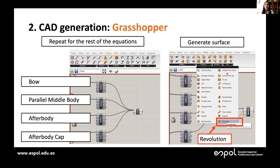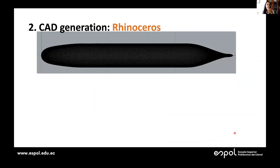We repeat the process for the rest of the equations: the parallel middle body, the after body, and the after body cap — four equations total. We join them together, and since the geometry is an axisymmetric body, we use the revolution tool to make the surface. We can then visualize the entire DARPA hull in Rhinoceros.